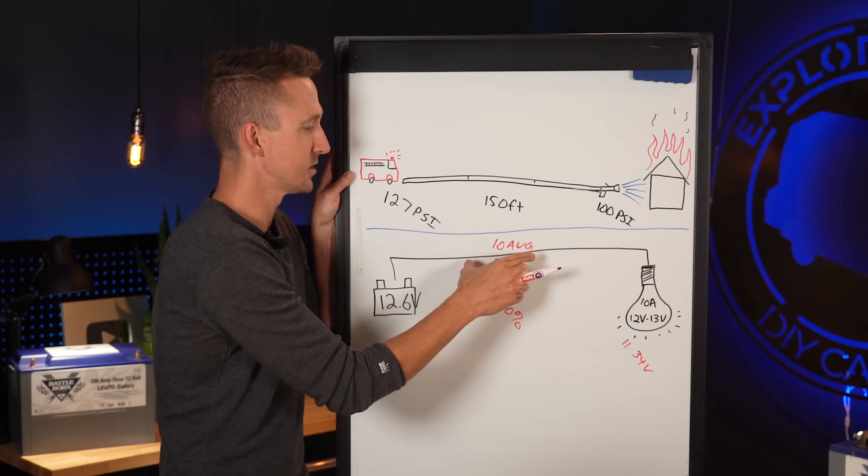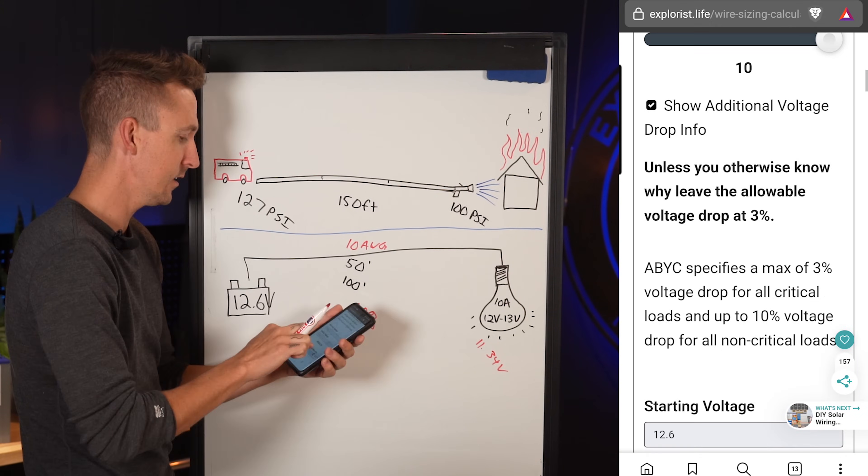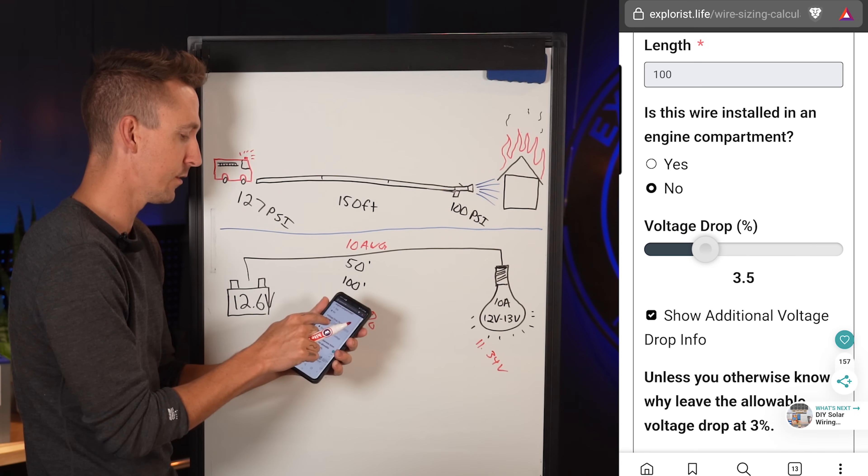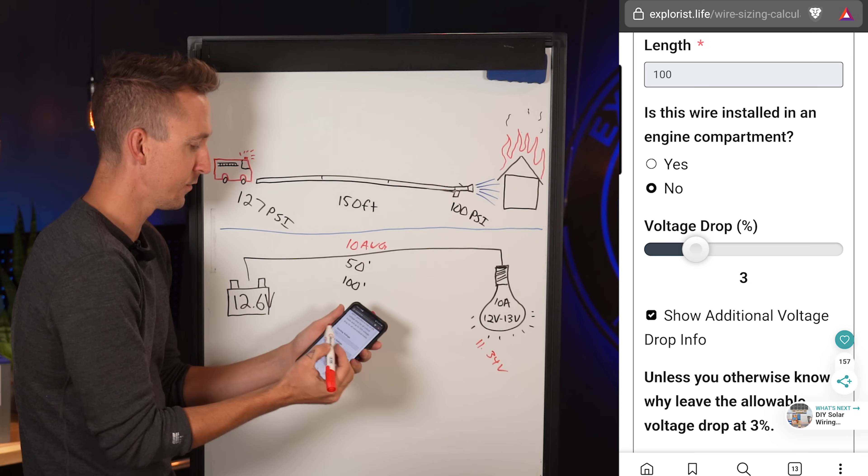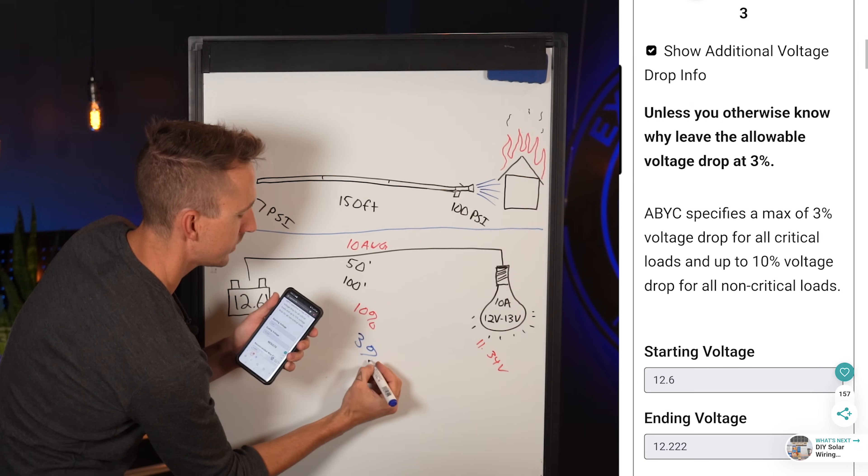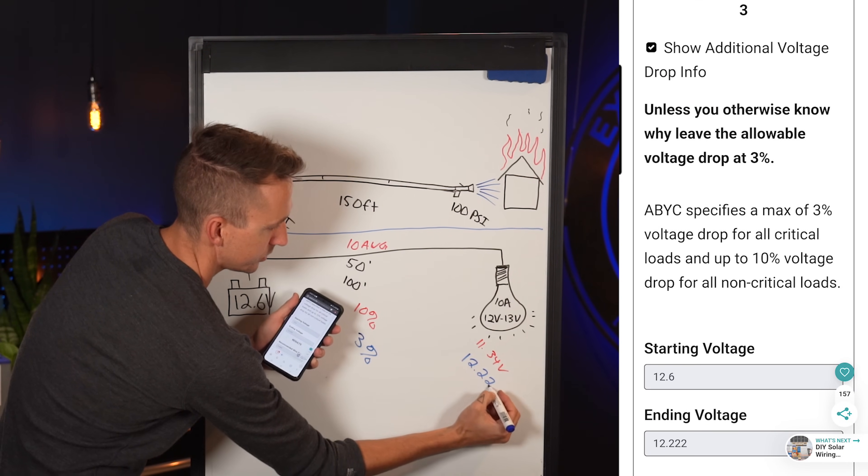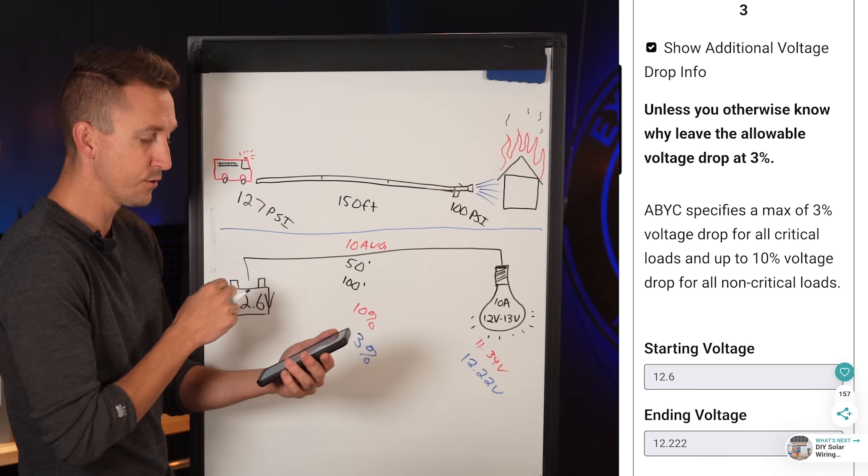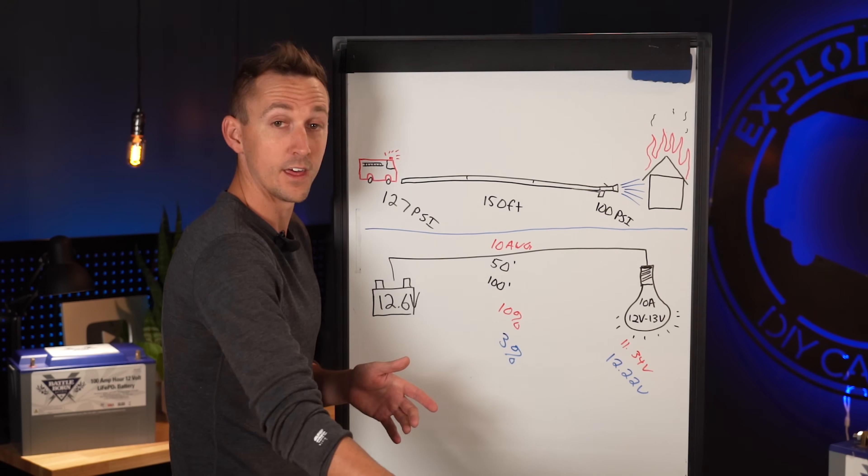So the third option is going to be to increase the wire size. So going back to my wire sizing calculator here, I can actually slide the voltage drop slider down to a more appropriate level. Let's call it 3% in this case, which means that we've got a starting voltage of 12.6 with 3% voltage drop. There is going to give us an ending voltage of 12.22 volts, which means that that light is going to function just fine. But to do that, that means that we would need to use four gauge wire for this, which is pretty excessive for just a single light bulb, but that's how it works.